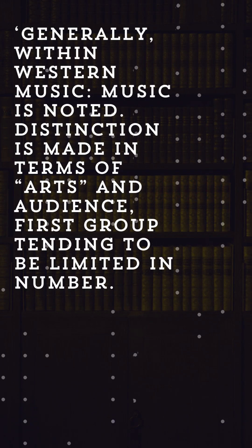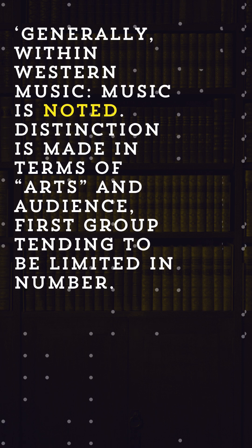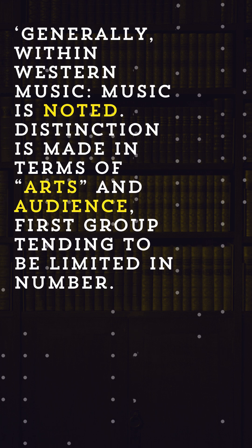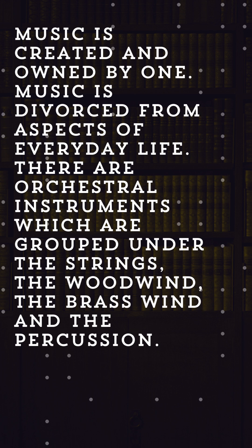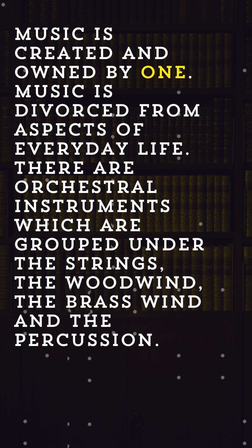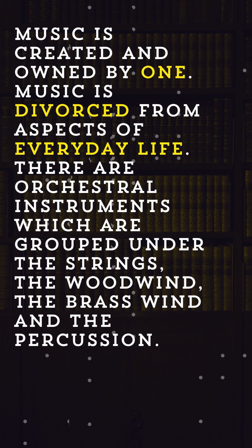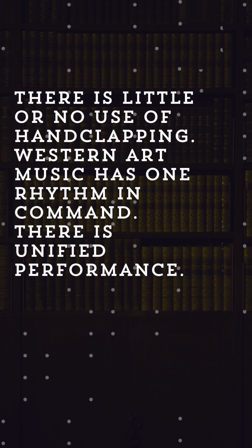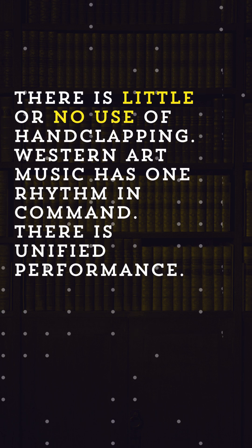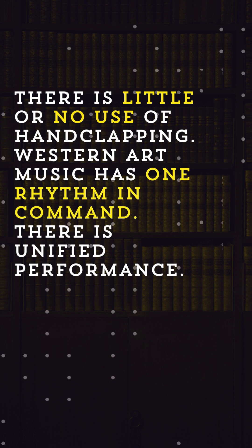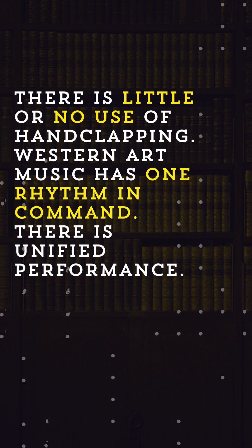Generally, within Western music, music is noted. Distinction is made in terms of arts and audience, with the first group tending to be limited in number. Music is created and owned by one. Music is divorced from aspects of everyday life. There are orchestral instruments grouped under the strings, the woodwind, the brass wind and the percussion. There is little or no use of hand clapping. Western art music has one rhythm in command, and there is unified performance.